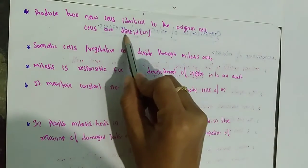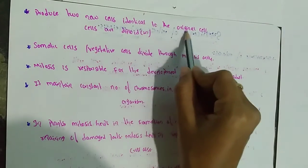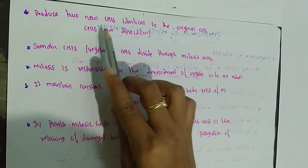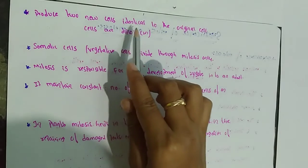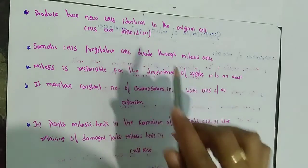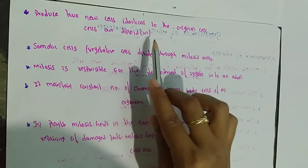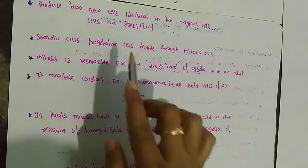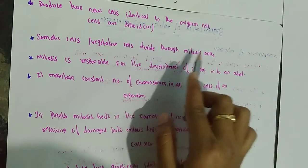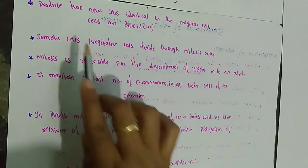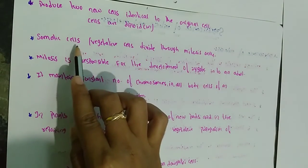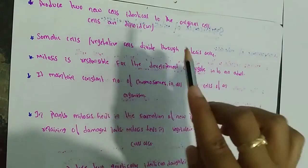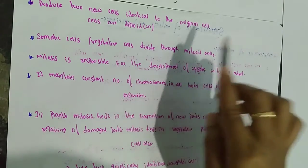Mitosis produces two new cells identical to the original cells. These are diploid. Somatic cells, or vegetative cells, divide through mitosis only, producing genetically identical cells.